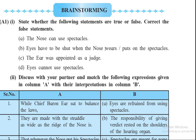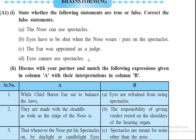'Eyes have to be shut when the nose wears the spectacles' — according to the poem, this is true, because this was the verdict given by the judge. Then 'The ear was appointed as a judge' — correct, we all know it. 'Eyes cannot use spectacles' — yes, according to the poem, this is also true, because the judge gave the verdict that the spectacles belong to nose and eyes have to be shut whenever it is put on the nose.